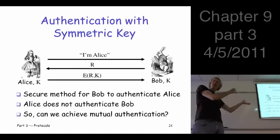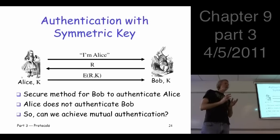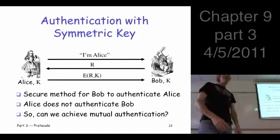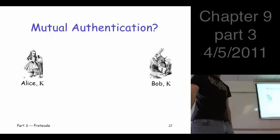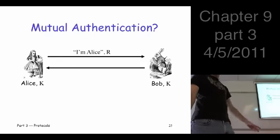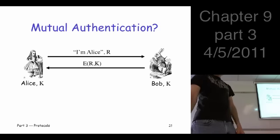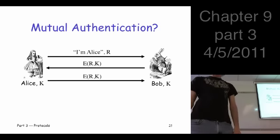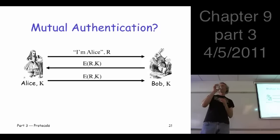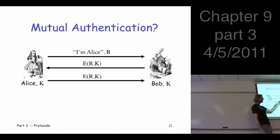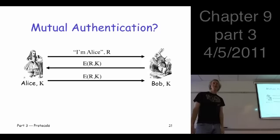So now let's try to step it up a little bit here. Can we modify this or improve on this so that we can get mutual authentication, so both Alice and Bob are authenticated? Well, it should be easy. We've got this authentication working in one direction, so let's just try something simple.